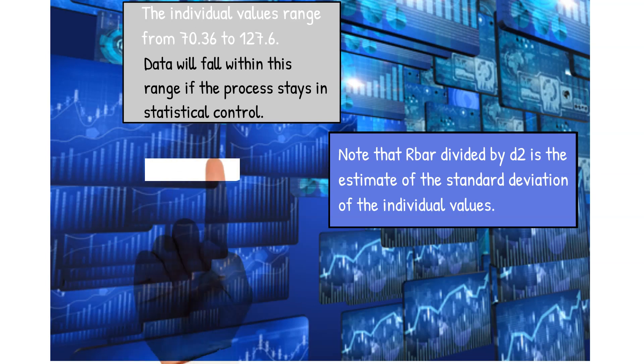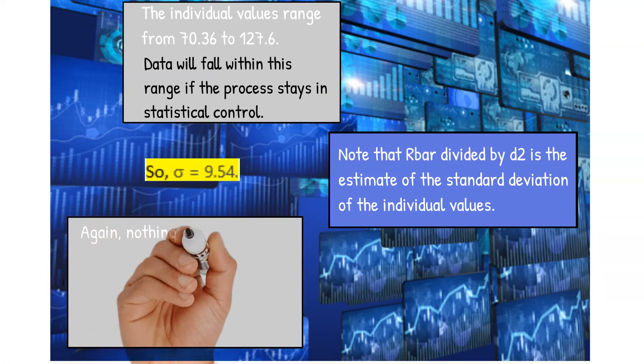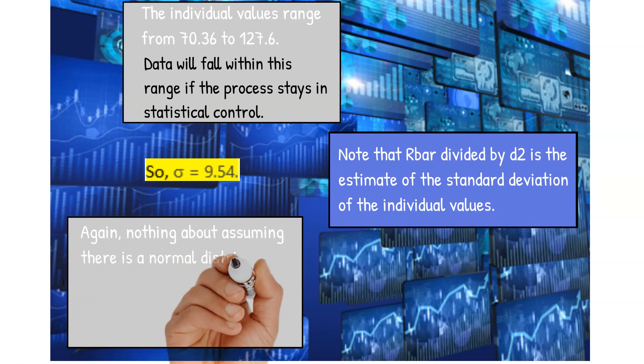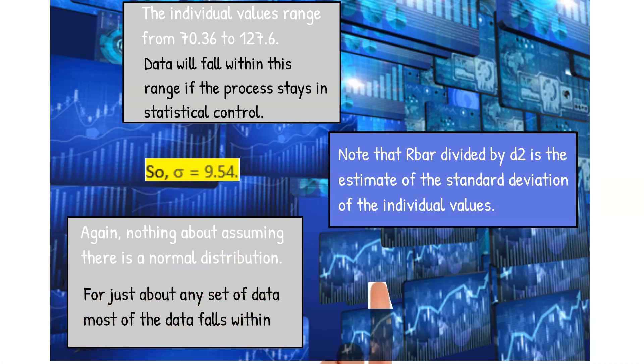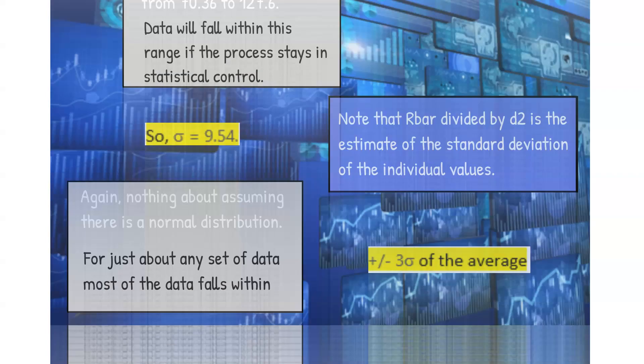Note that R bar divided by D2 is the estimate of the standard deviation of the individual values. That was 9.54. Again, we're not saying anything about assuming there's a normal distribution because for just about any set of data, most of the data is going to fall within plus or minus three sigma of the average. Now we move on to step four.